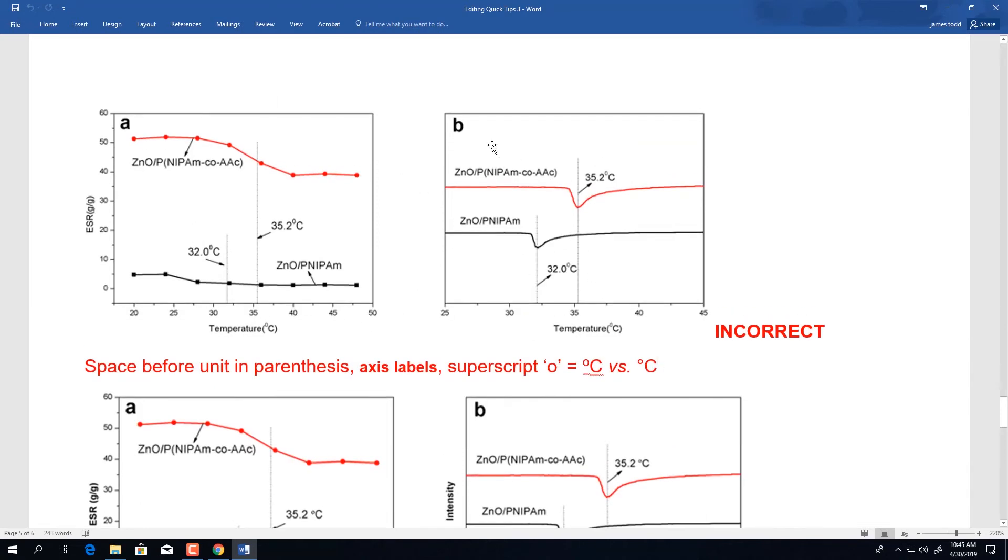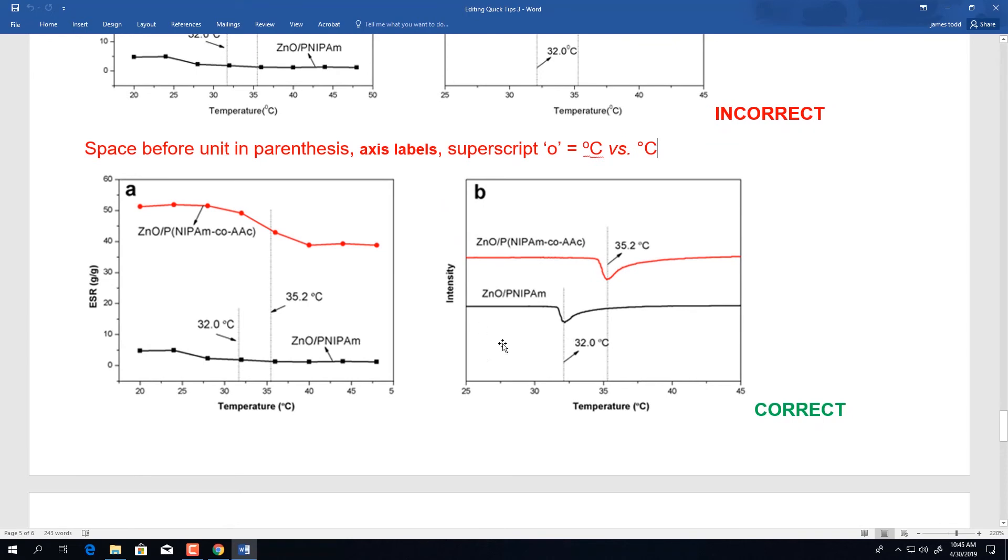Again, on this image, which is the incorrect submitted image, there is no space between the axis label and unit of measurement. In the corrected image, if we scroll below, you'll notice there is a space between the axis label and unit, that there is a space between the unit of measurement and numerical value, and that the correct symbol for degree is used. The axis labels are bolded, whereas in the first image, they were not bolded.